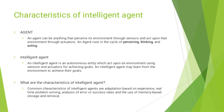Effectors are the devices which affect the environment. Effectors can be legs, wheels, arms, fingers, wings, etc. An intelligent agent is an autonomous entity which acts upon an environment using sensors and actuators for achieving a goal. An intelligent agent may learn from the environment to achieve its goal.